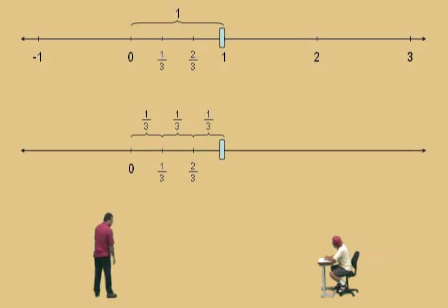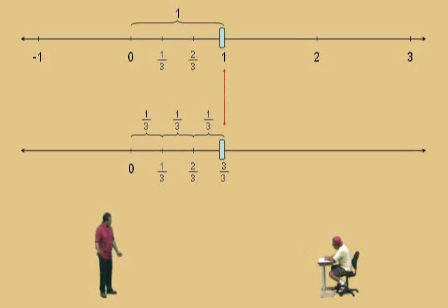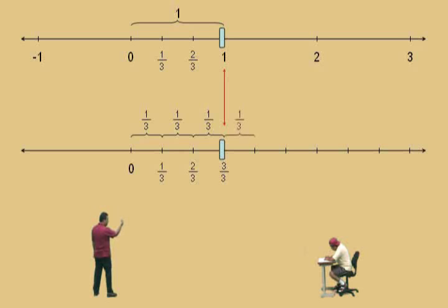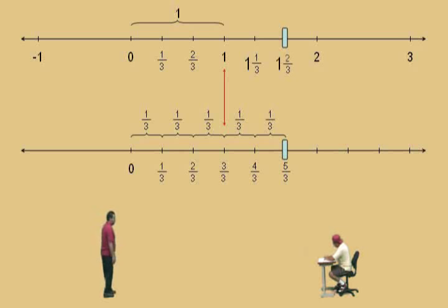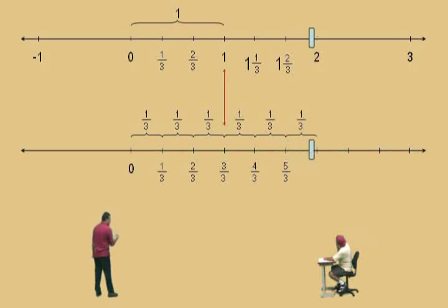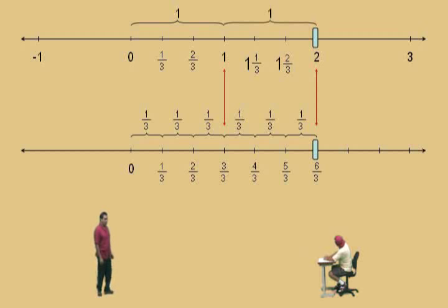Let's add another third — three-thirds, and three-thirds is the same as one. Let's continue on. Add another third: four-thirds, which is one and one-third. If we add another third, that's five-thirds, the same as one and two-thirds. Add another third: six-thirds, which is the same as two, because six divided by three is two.